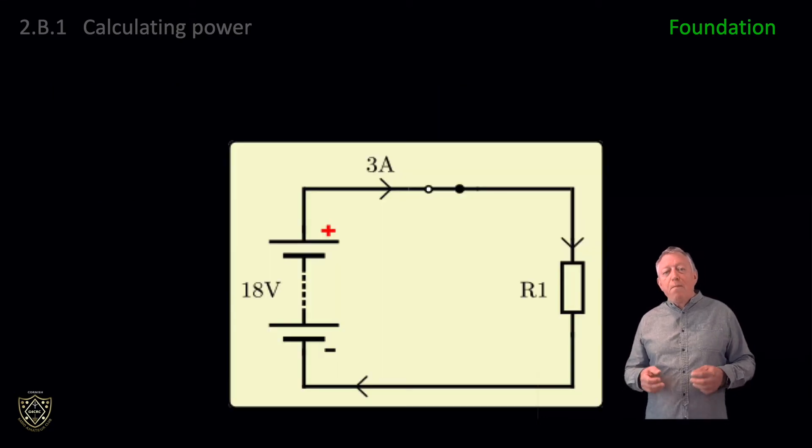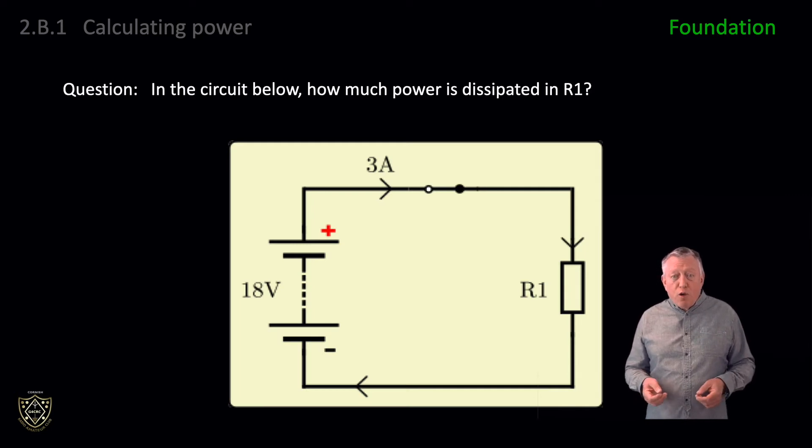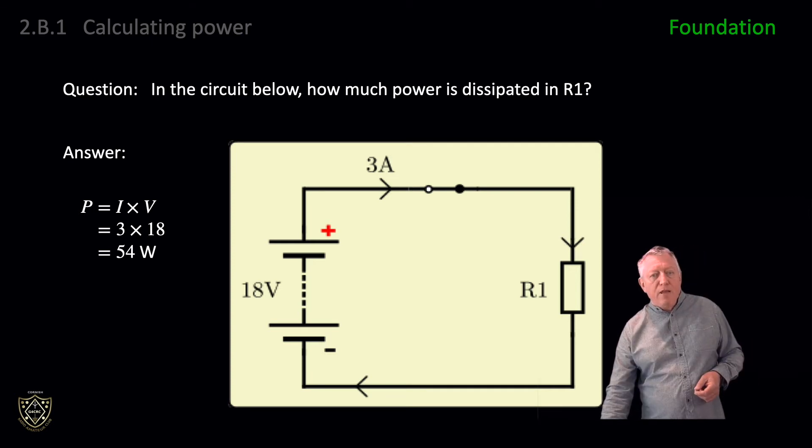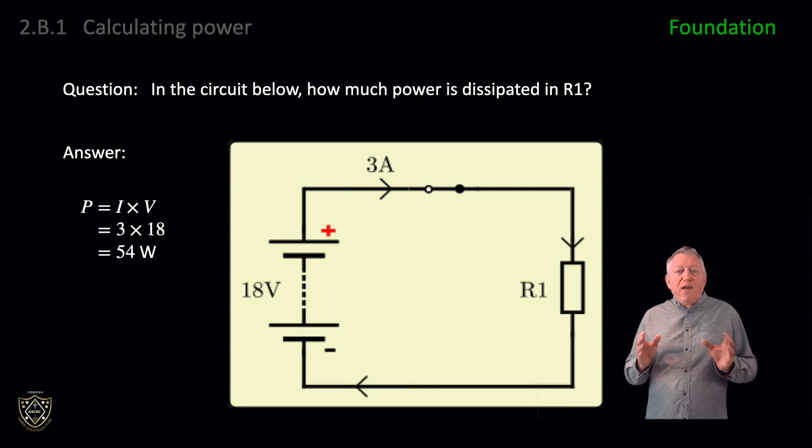Let's do a P equals IV question. In the circuit shown, how much power is dissipated in R1? Well, P equals I times V equals 3 times 18, which equals 54 watts. In the previous question we were given the current and voltage, and it's a simple matter of multiplying them together to get the power.